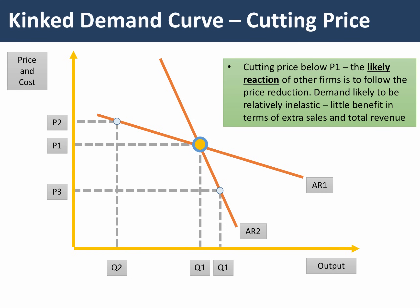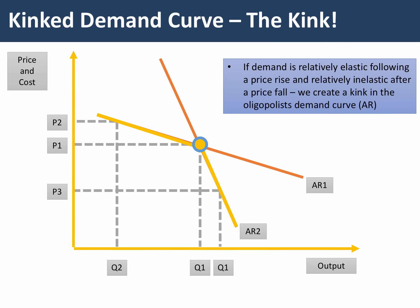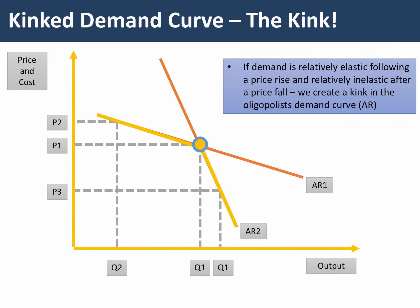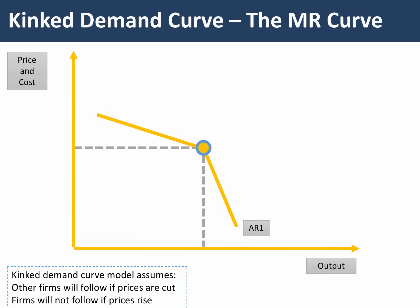If the firm cuts its price from P1 to P3, we assume the likely reaction of other firms is to follow the price reduction to avoid losing market share. In this situation demand is likely to be more inelastic — following AR2 rather than AR1 — and again there may be little benefit in extra sales, and total revenue for the business may actually fall. Putting the two reactions together — an elastic response to a price increase and an inelastic response to a price reduction — gives us the kinked demand curve model.